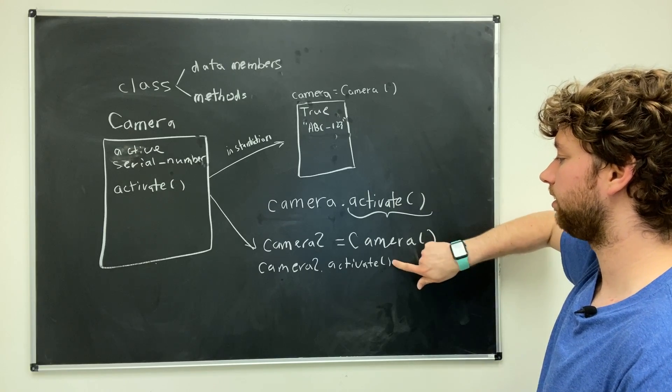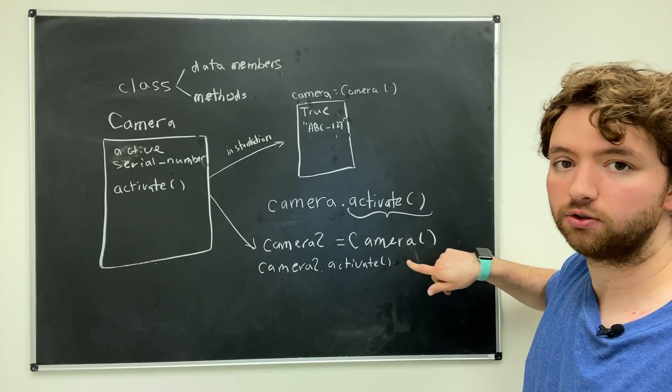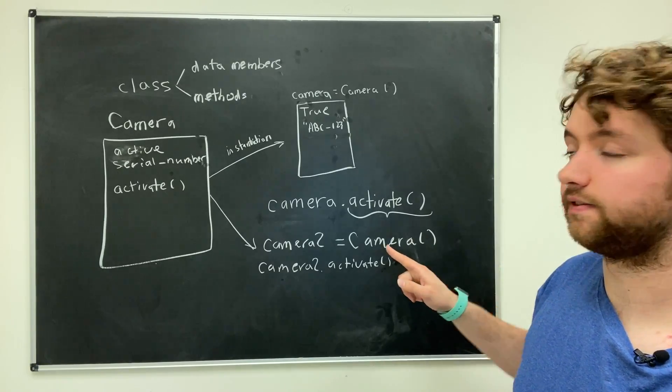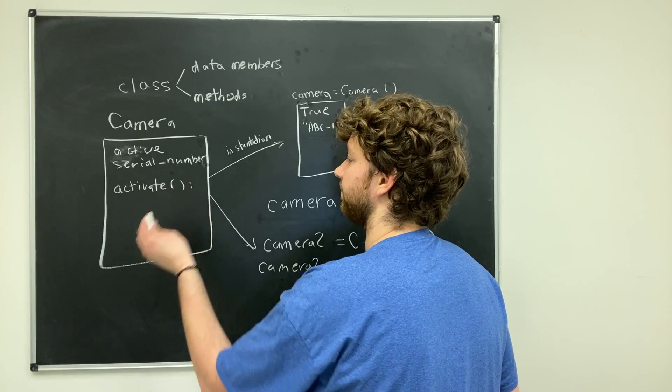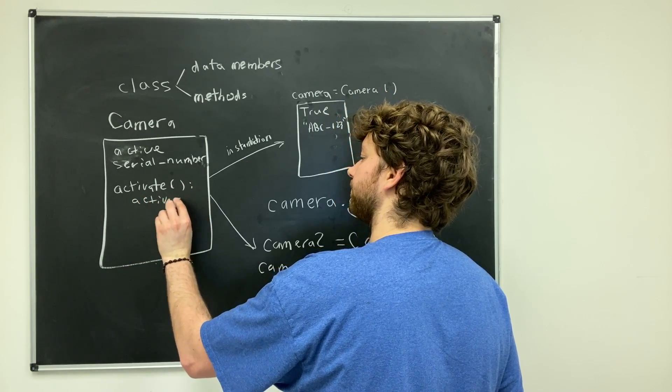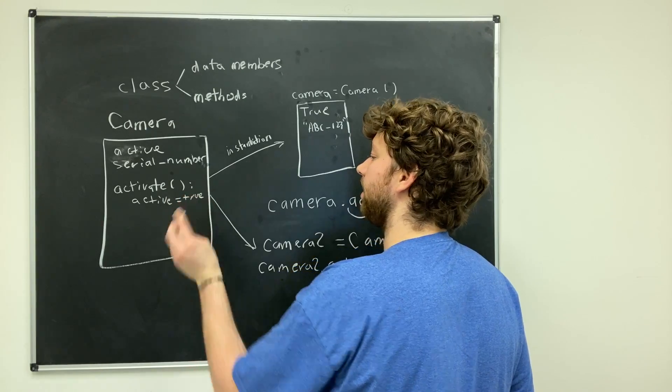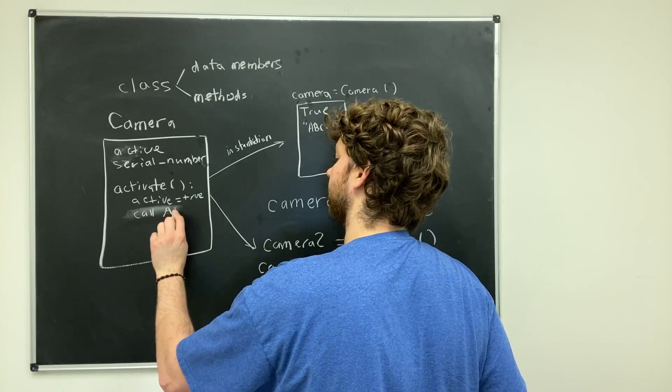Let's just repeat what we got. We got the data members—these are just variables, so we got the active and we have the serial number. Then we have methods—these do processing. In this case we have activate. What exactly does activate do? The actual processing of activate is defined in the class, so you might define this function as setting active to true.